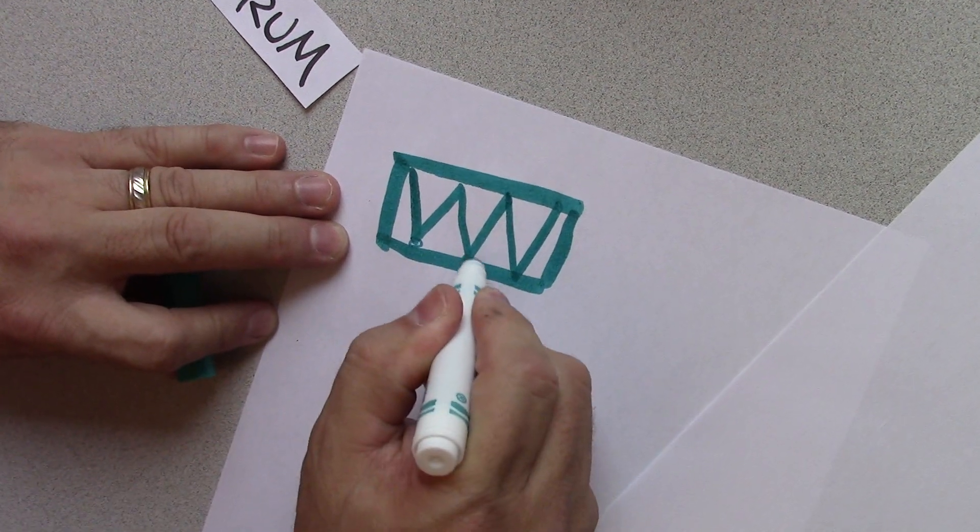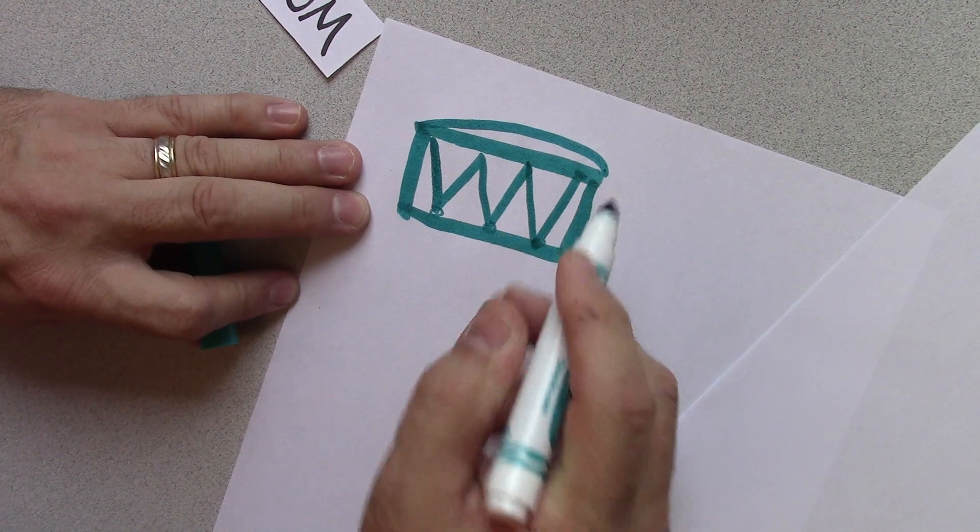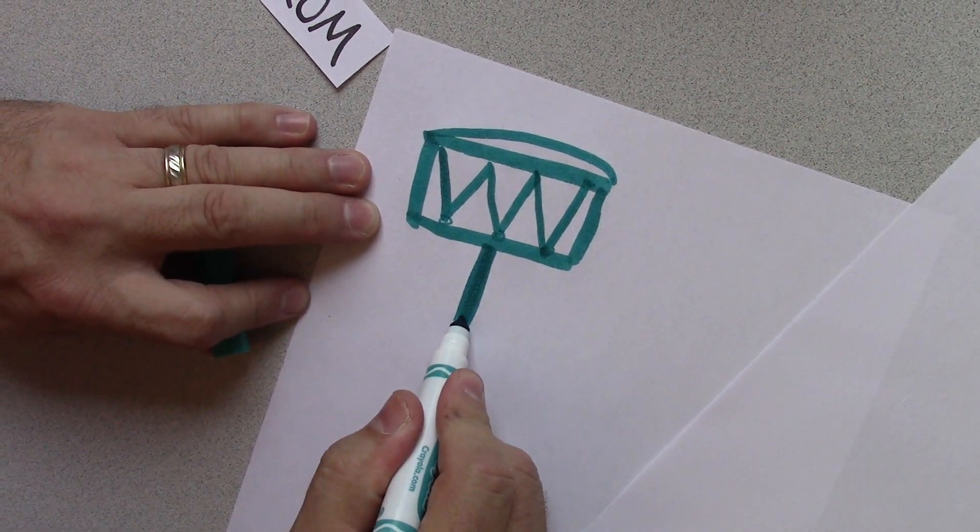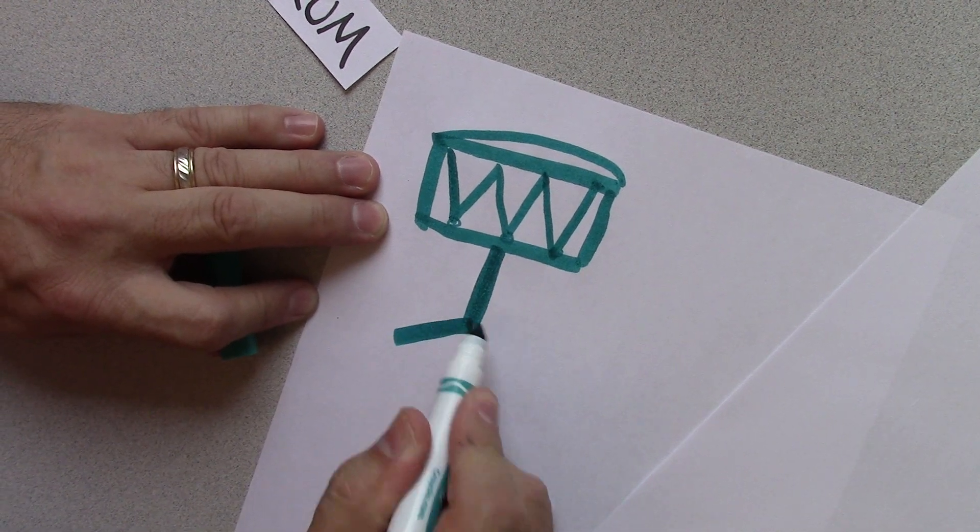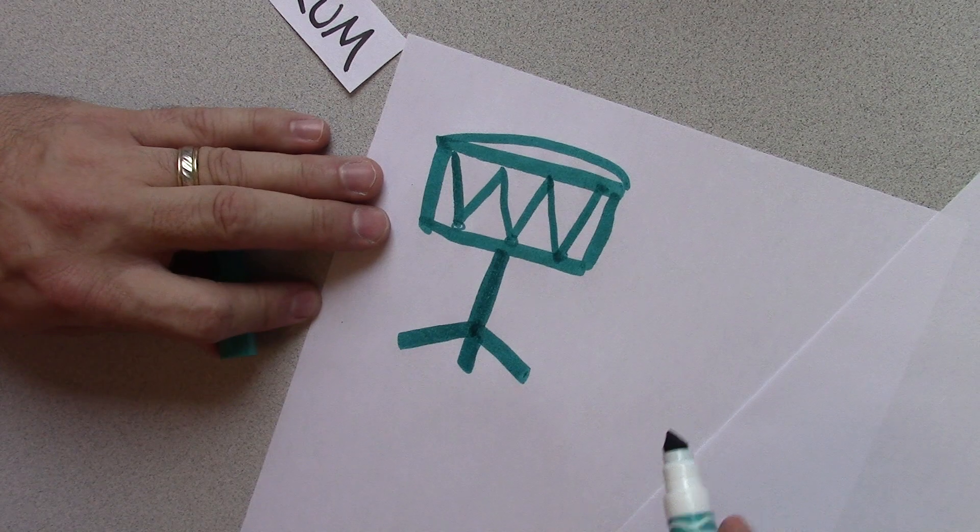And sometimes they have little circles right there and maybe even a little top like that. And we can even put a stand on it if we want to draw a straight line down, draw another line, draw another line. Look at that. Maybe even a boom. There's a drum.